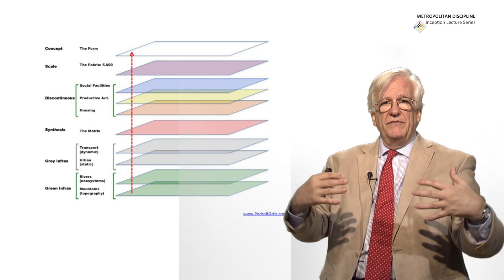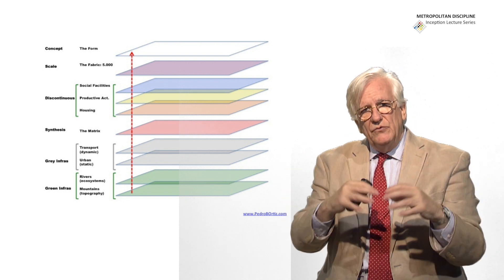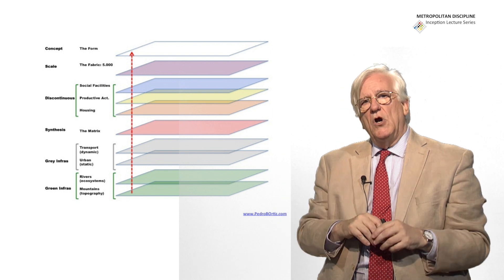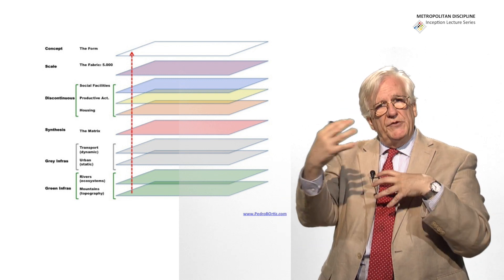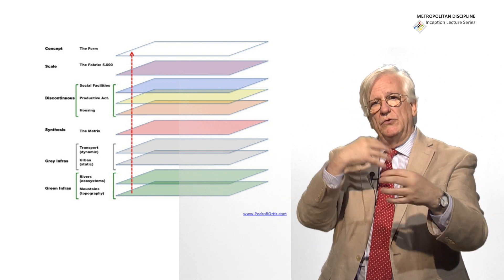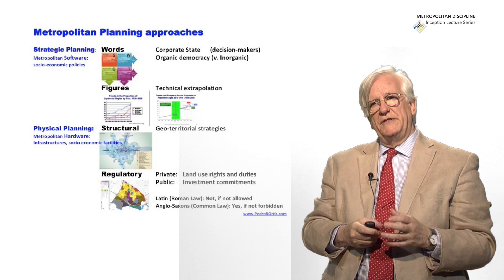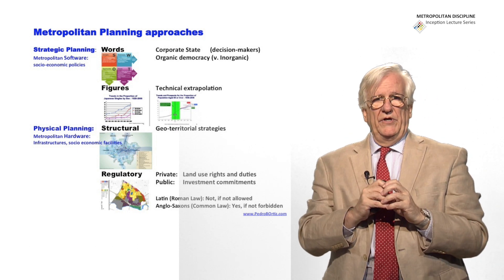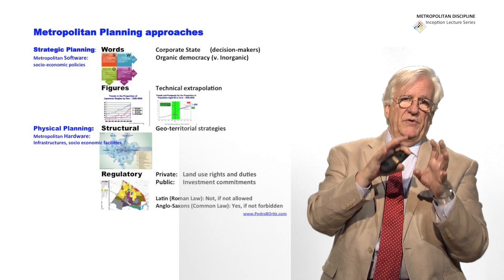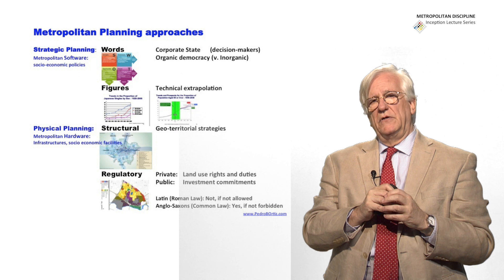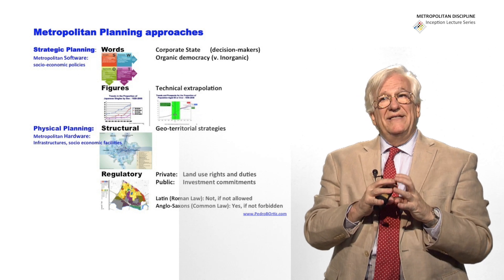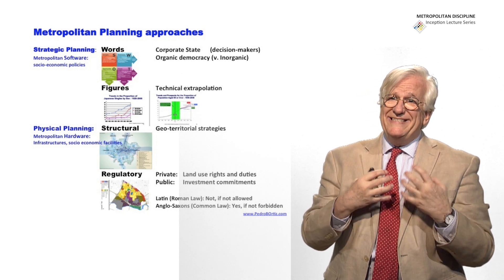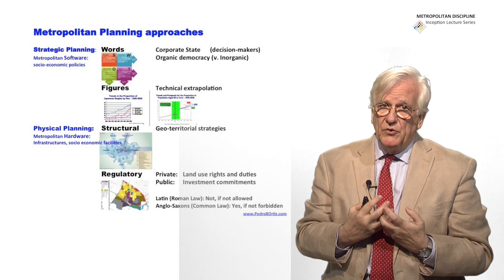Then, once you have the structure of the metropolis, you introduce the housing, the industry, commerce, and so on, and the hospitals, the schools, universities, and all the social facilities. So we have two ways of dealing with planning a metropolis — the physical component. One is the strategic approach of planning, and the other is the structural approach.